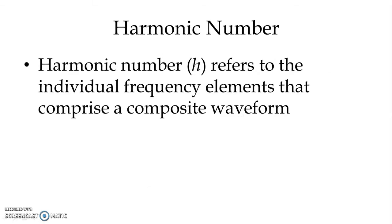We start with harmonic numbers. Harmonic number h refers to the individual frequency elements that comprise a composite waveform. For example, when we refer to a fifth harmonic, it refers to the frequency which is five times the fundamental frequency. For example, with fundamental frequency 50 Hz, the frequency for the fifth harmonic will be 250 Hz. Same way, the seventh harmonic refers to a frequency seven times the fundamental frequency, that is 350 Hz.